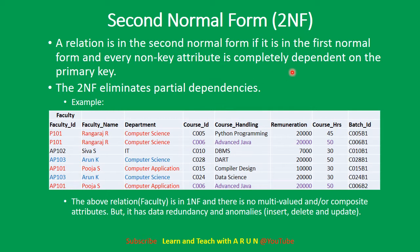If there is more than one key, then partial dependency can occur. Let's see an example to understand this better.